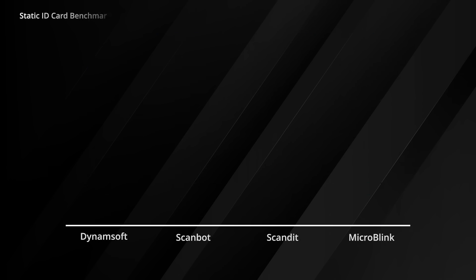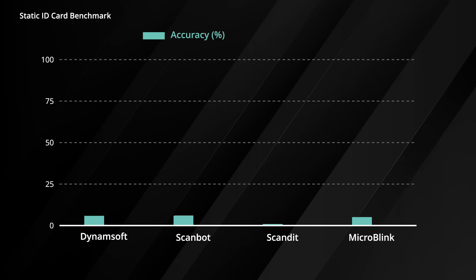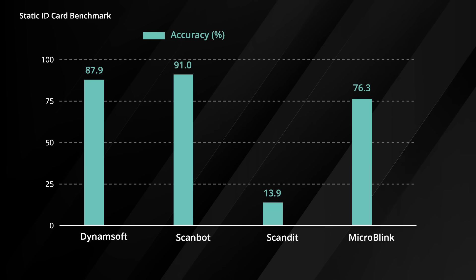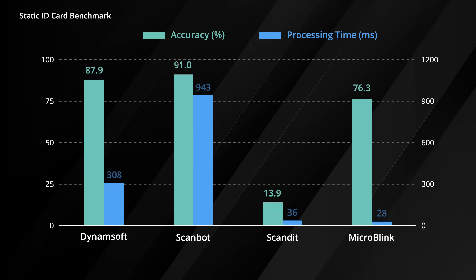For ID cards, Dynamsoft hit 87.9% accuracy with an average processing time of 308 milliseconds, again delivering consistent performance.